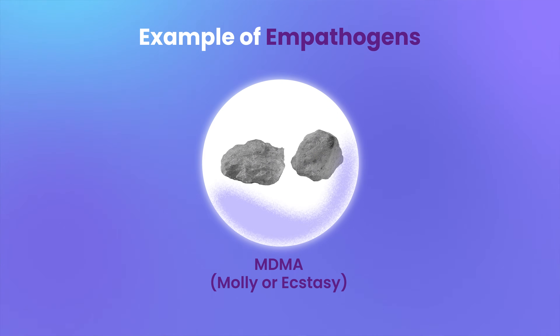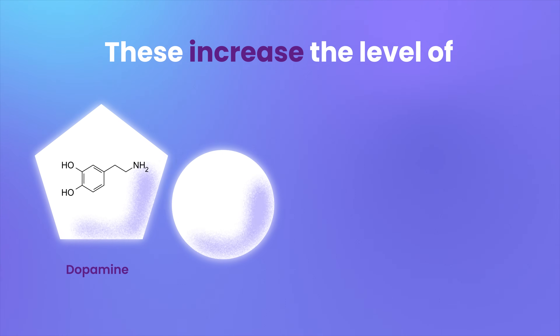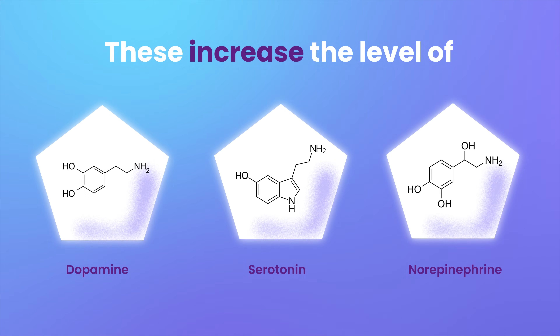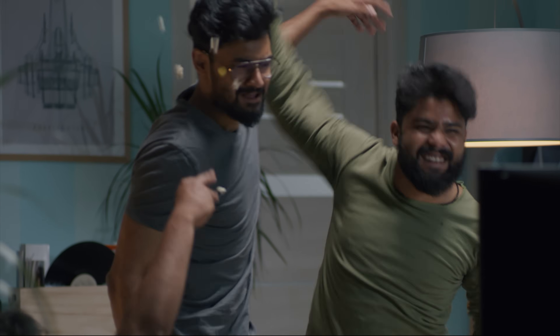The third category is empathogens. The best example is MDMA, also called ecstasy or molly. These drugs increase the levels of dopamine, serotonin, and norepinephrine, which overall leads to a feeling of excitement, happiness, and community bonding. Now let's break it down molecule by molecule and figure out how each of these drugs affects the brain.